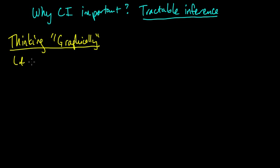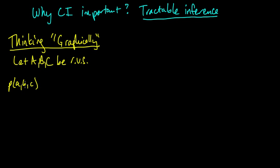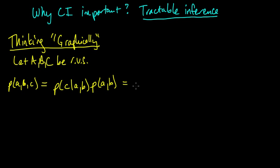Can we associate a graph with a probability distribution? Let a, b, and c be random variables, and let's think about their joint distribution — P(a, b, c). This joint distribution can be factored as P(c | a, b) × P(a, b), and we can factor further as P(c | a, b) × P(b | a) × P(a).